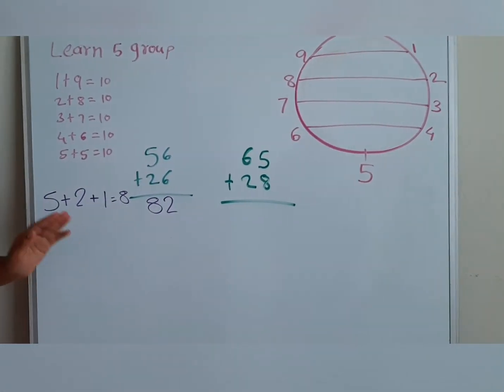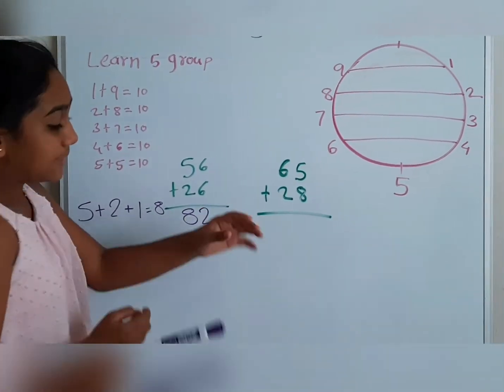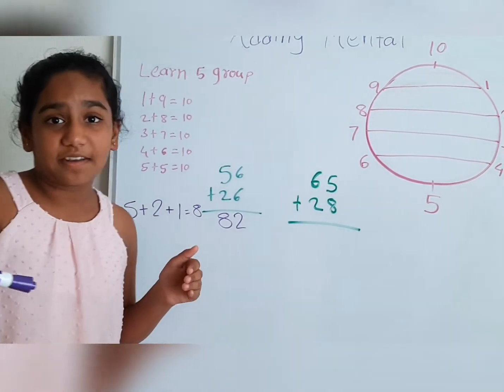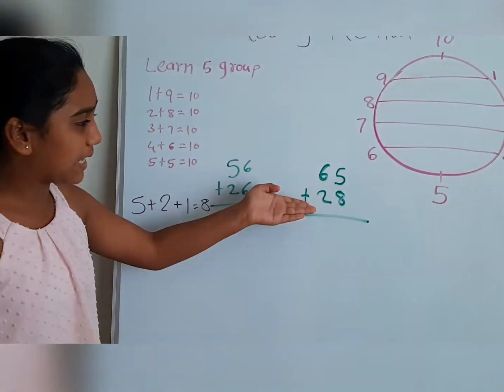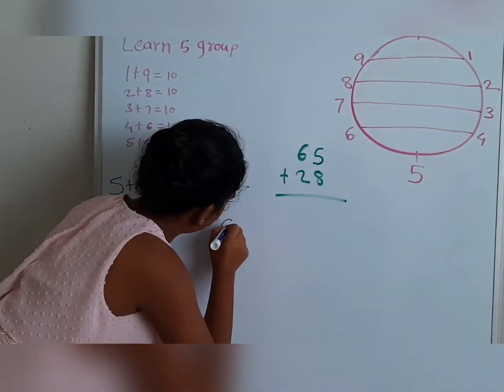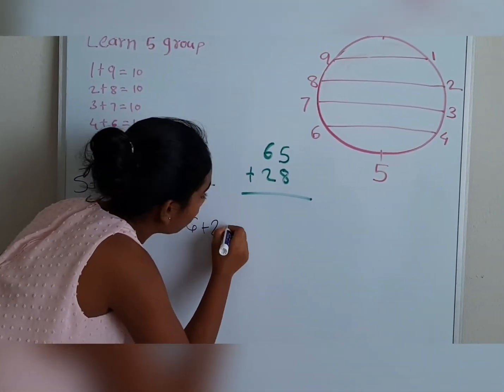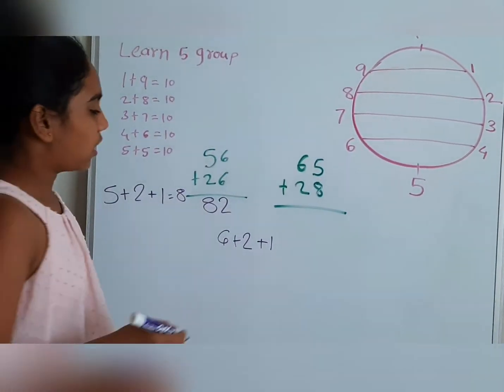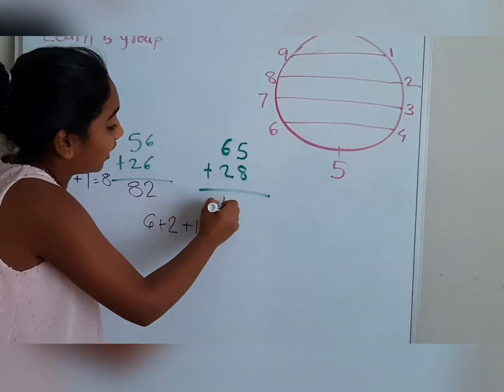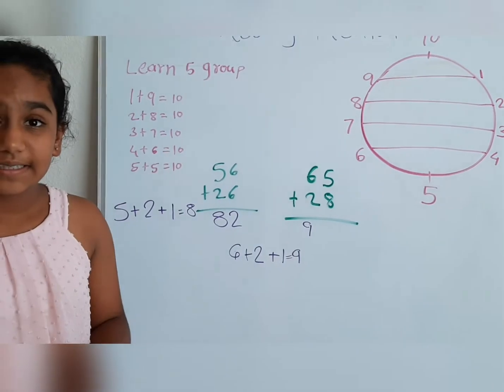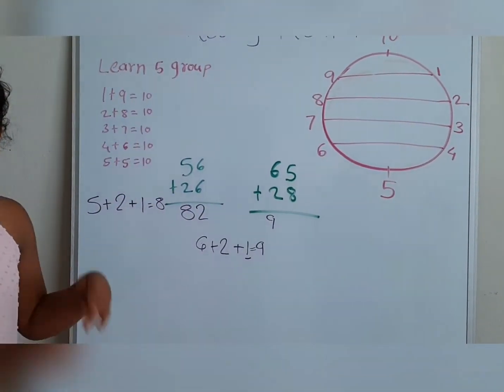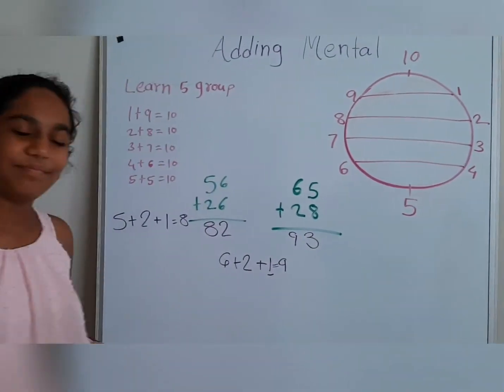Next question. 65 plus 28. Now, this, now, 5 plus 8 is more than 10, right? So we add 1 in 6 plus 2. What do you get? 8. So, 6 plus 2 plus 1 from this section. What do you get? Yep, you get 9. And then, we write our 9. So what is 5 plus 8? 13, but we already used up our 1 here, didn't we? Now, we write our 3 now. Yep, we did it. 93.